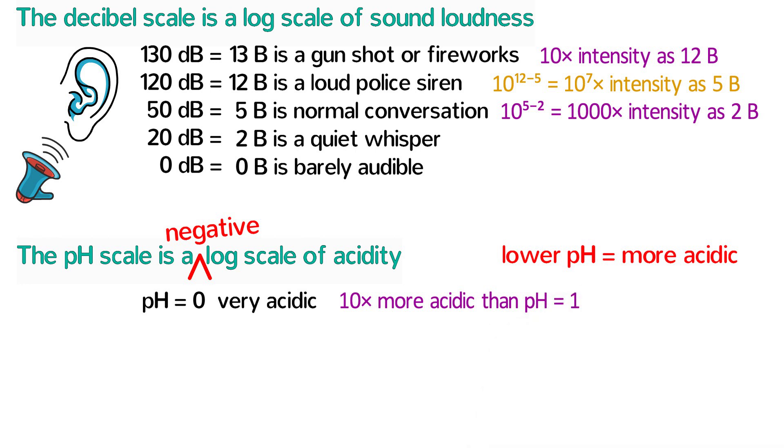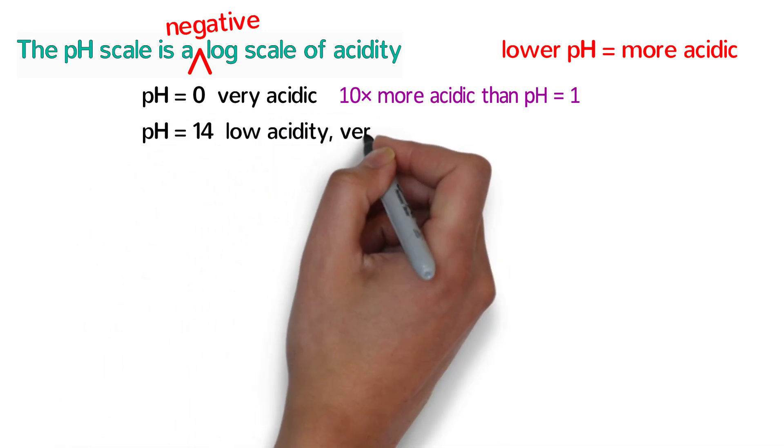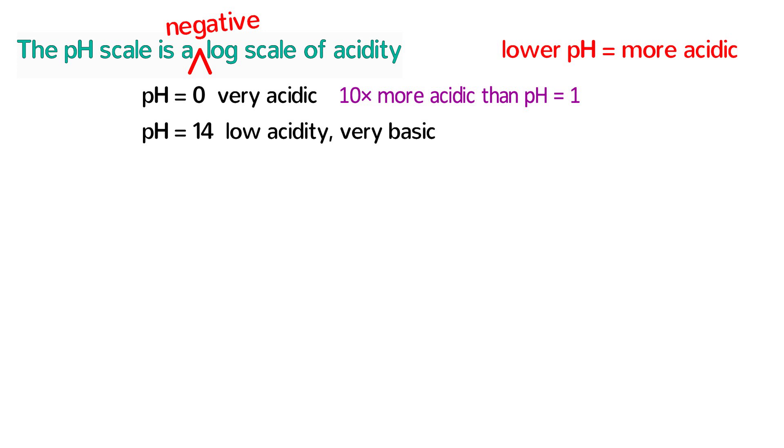Similar to the other log scales, a decrease in one pH corresponds to a solution with ten times the acidity. A pH of fourteen, on the other hand, has a very low acidity and is considered to be quite basic.